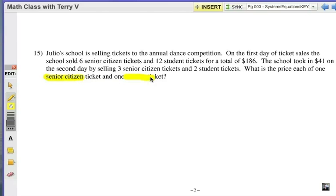We've got two variables there. I'm going to go ahead and say that senior citizen will call that S, and student ticket will call it T, T for teenager. Our first task is to write two equations. Now, let's look at this information. Six senior citizen tickets, 12 student tickets, total of $186.